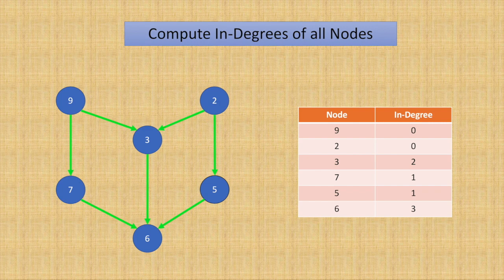For node 9, the in-degree is 0, and similarly for node 2, since they did not have any incoming edges. Next, for node 3, the in-degree is 2, since it has one edge from node 9 and another one from node 2. Similarly, node 7 and 5 have an in-degree of 1, since they have only one edge coming to them. Node 6 has an in-degree of 3, since there are three incoming edges.